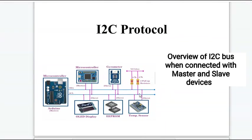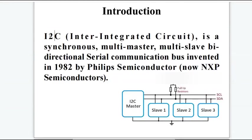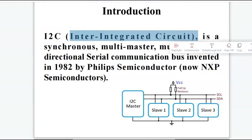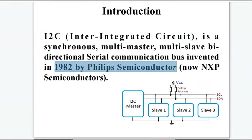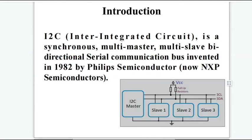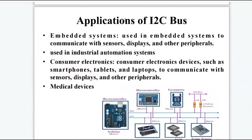I2C is an acronym for Inter-Integrated Circuit. It is a synchronous, multi-master, multi-slave, bi-directional serial communication bus or protocol, invented in 1982 by Philips Semiconductor, now known as NXP Semiconductors.